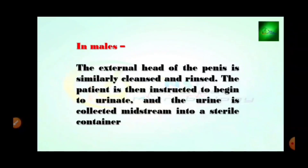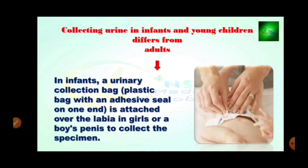In males, the external head of the penis is similarly cleansed and rinsed. The patient is then instructed to begin urinating, and the urine is collected midstream into a sterile container. Collecting urine in infants and children differs from adults. In infants, a urinary collection bag — a plastic bag with an adhesive seal on one end — is attached over the labia in girls or over the penis in boys to collect the specimen.